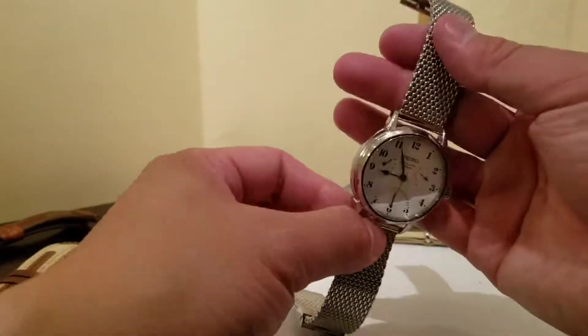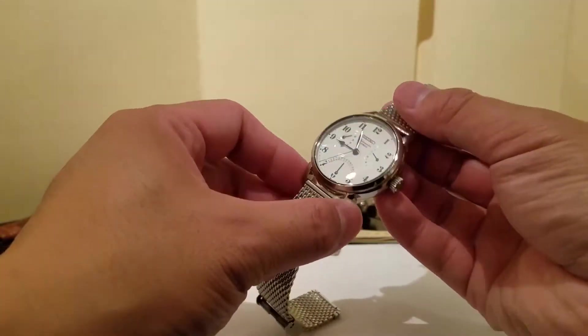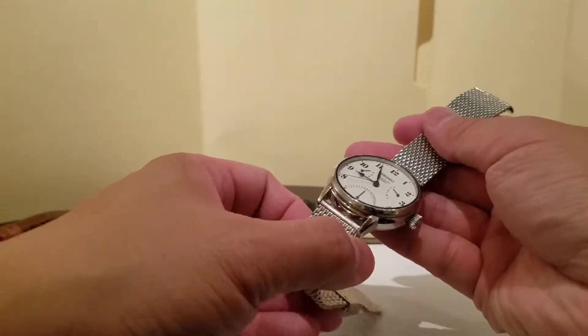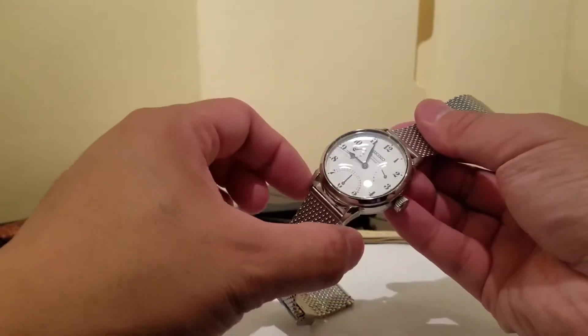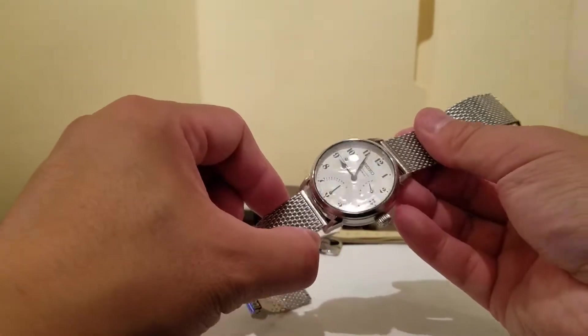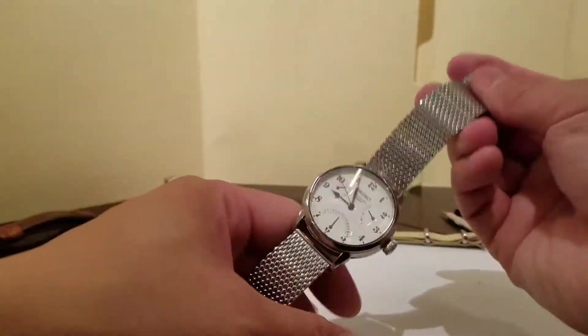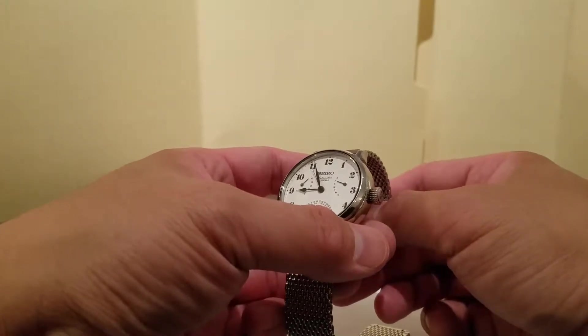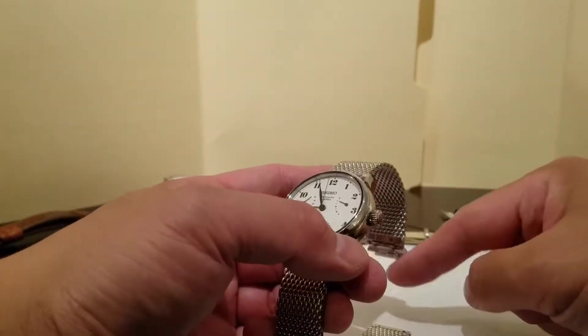So I really wasn't feeling that a dive style bracelet, such as an Oyster, would really work on this. Something with links might be okay, but that wasn't my first impression. Usually those dive bracelets, such as an Oyster, they usually have a clasp.